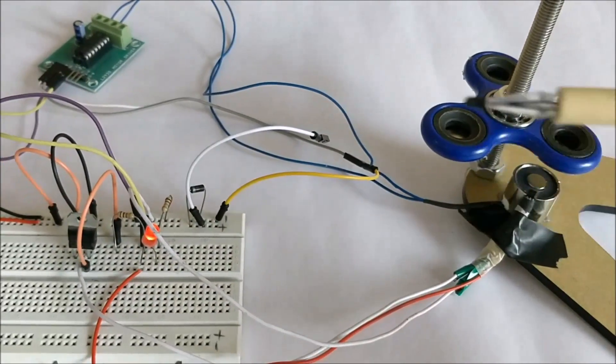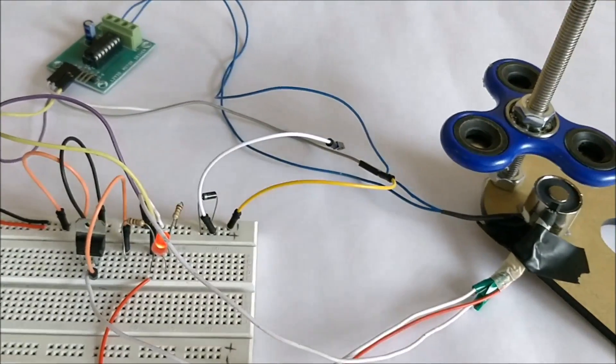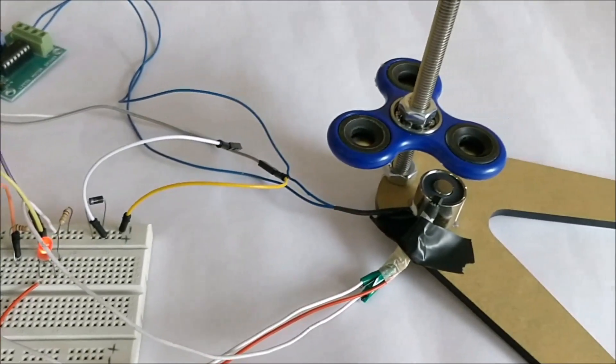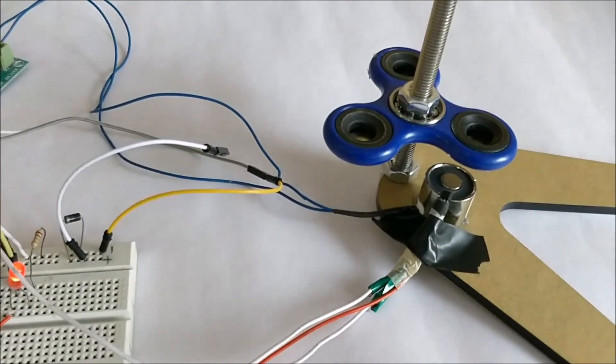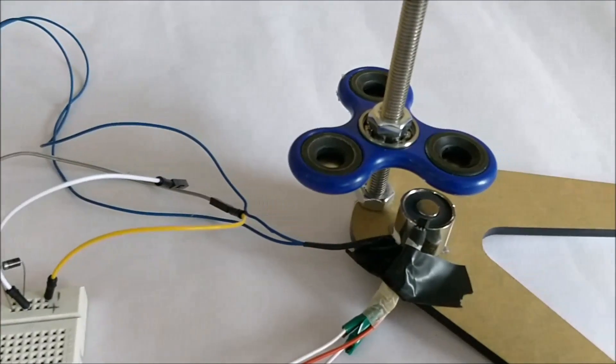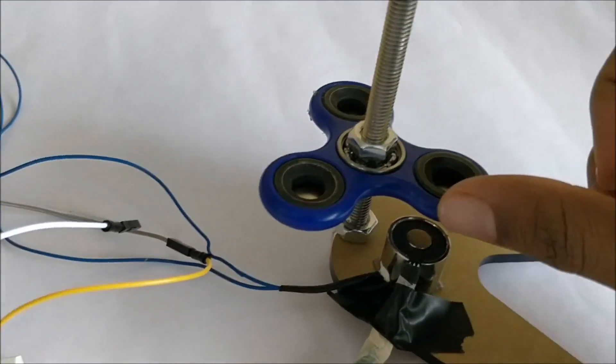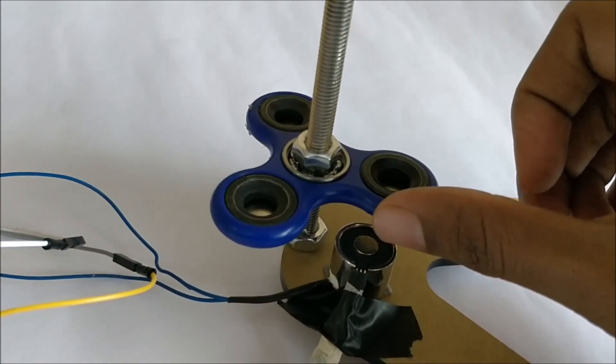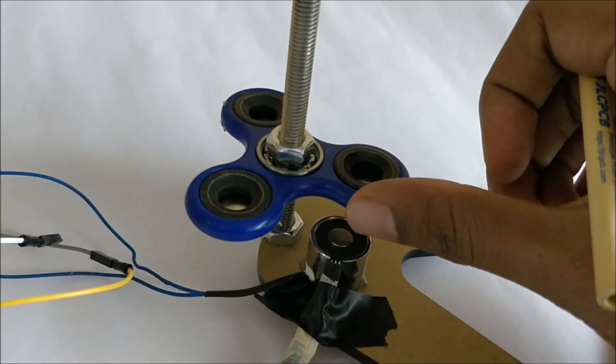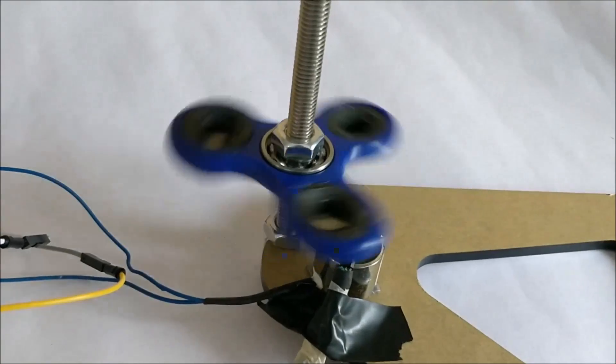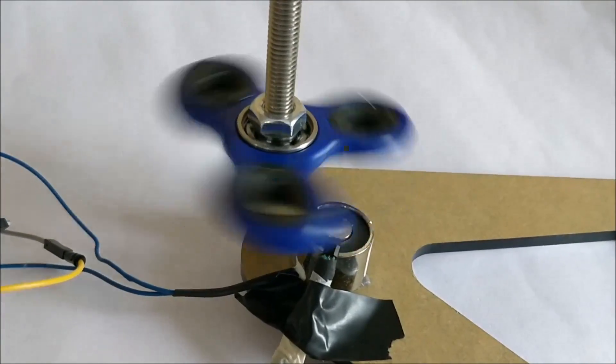This video will just demonstrate you how the project works. Now in order to start the fidget spinner to keep it rotating, you just have to give an initial push so that it cuts the hall effect sensor. So let me just give the initial push and that's it, the spinner starts to rotate.